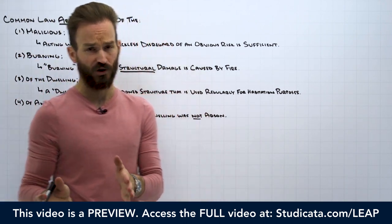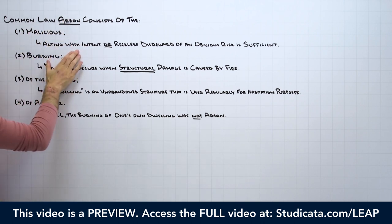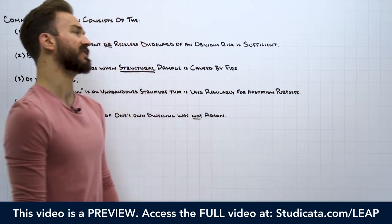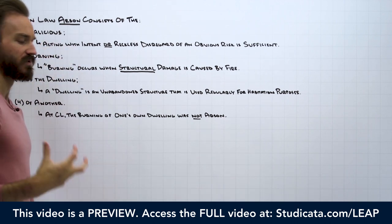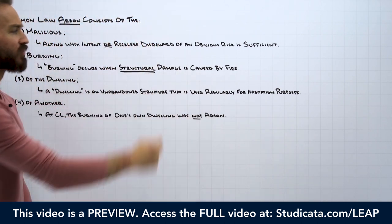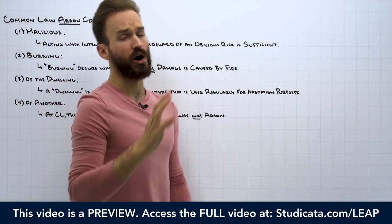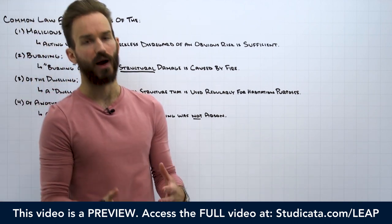It is not a specific intent crime, which means the defendant can be liable for common law arson whether the defendant is acting with intent or with reckless disregard of an obvious risk. In other words, intent is not required to be liable for common law arson. We'll see reckless conduct can be sufficient to satisfy the mens rea requirement for common law arson because common law arson is a malice crime.